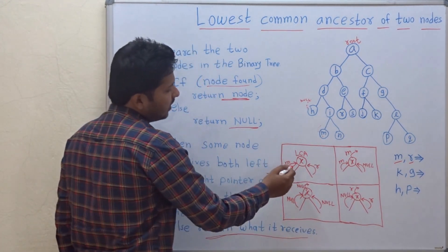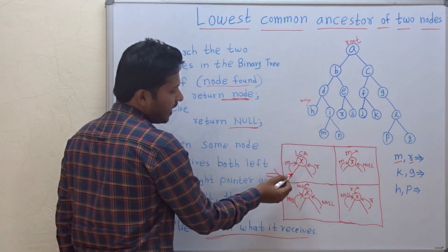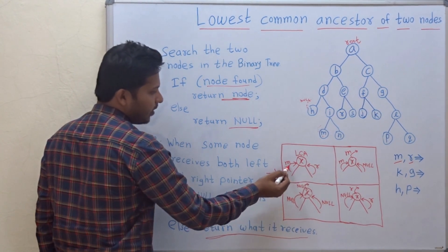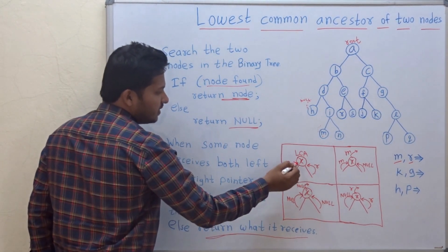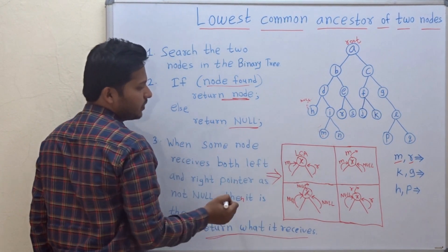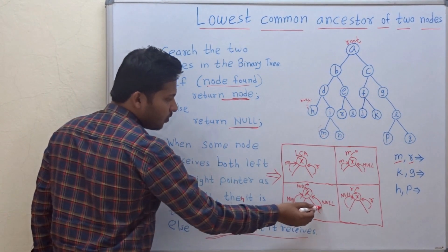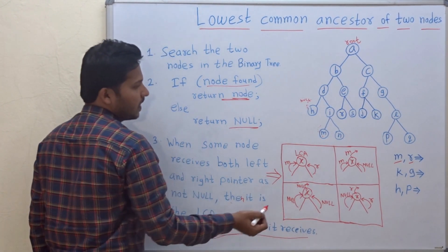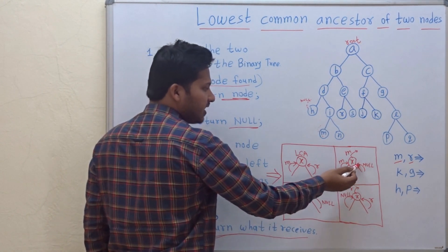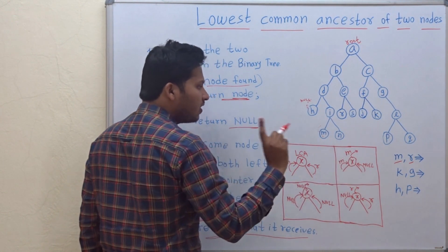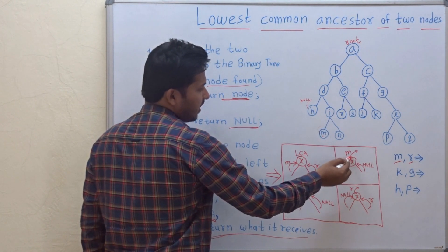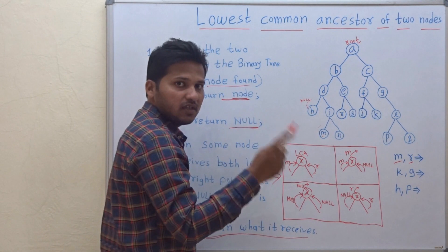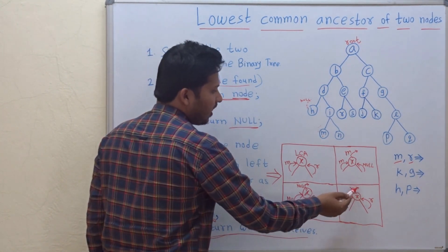Suppose X is the node and from its left child and right child it receives not NULL nodes — M and R. Then it means X is the lowest common ancestor. If X receives NULL from both children, then it returns NULL. If from the left child it receives M and from the right child it receives NULL, then it will return the non-null node, that is M. Similarly, if from the right side it receives R, it will return R, the non-null node.